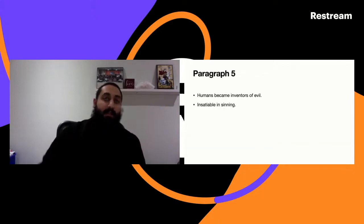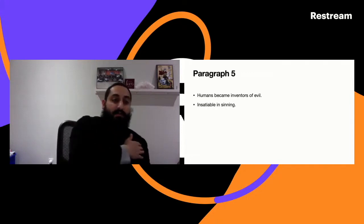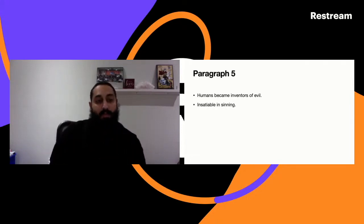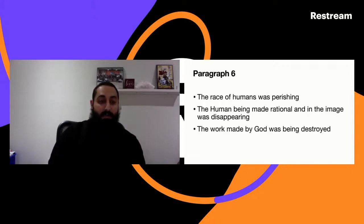He moves on to say the results of this corruption is that the humans and humanity became inventors of evil, insatiable in sinning, not able to get enough. The reality is at this point the race of the humans was perishing. The human being who was once made rational and in the image was disappearing. The work made by God was being destroyed.